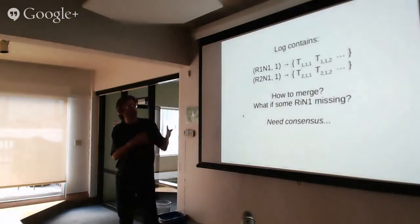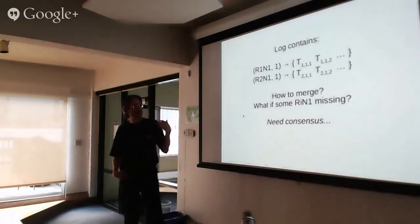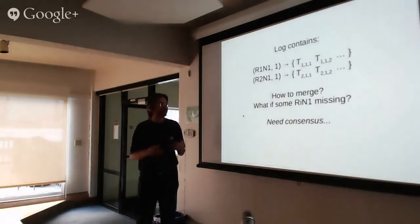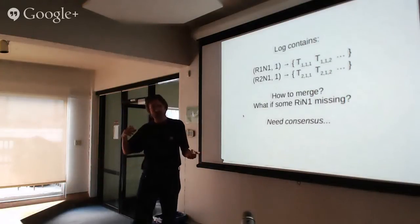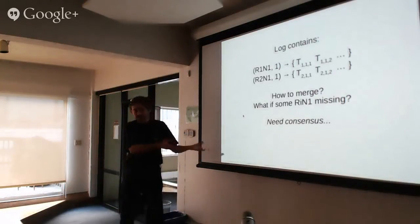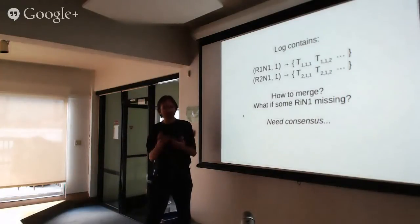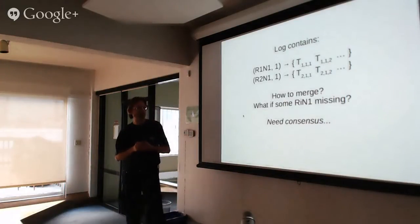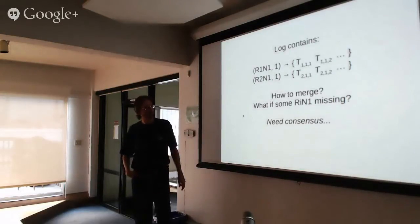You might say: why not arbitrarily always do replica 1 transactions first? The problem is maybe replica 1 is down and we're only working with replica 2. Maybe there are three replicas and one can't see another, so you can't tell whether R1 even exists. So nodes are not going to decide on the same ordering — they won't be able to see the same set of replicas. Instead, we really have to reach consensus on what order to put them in.